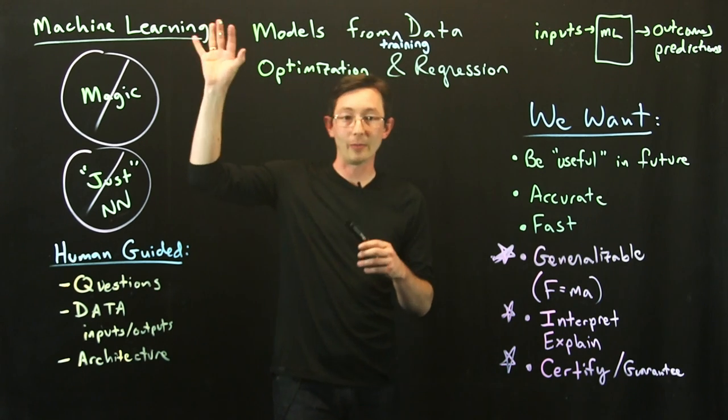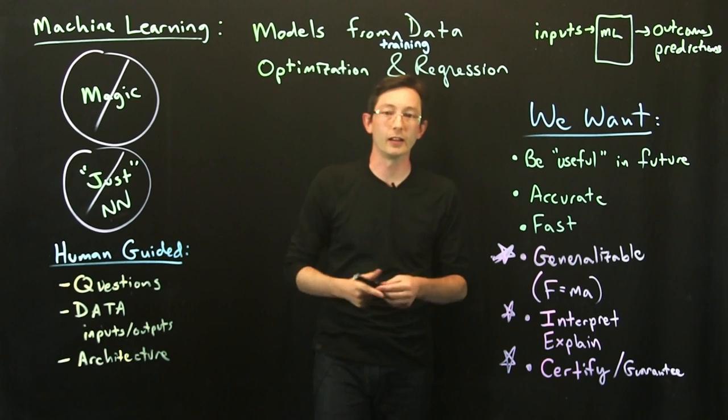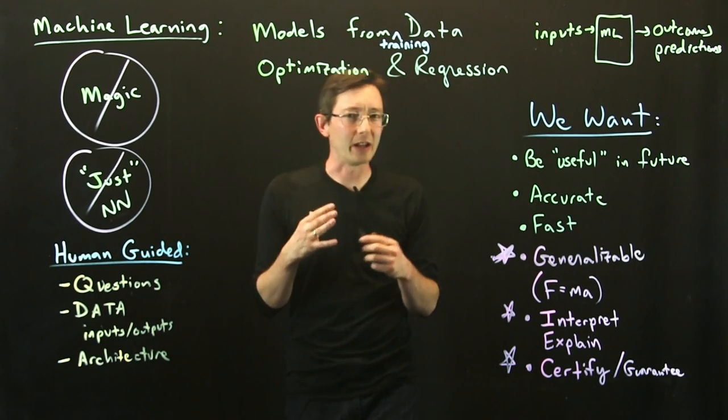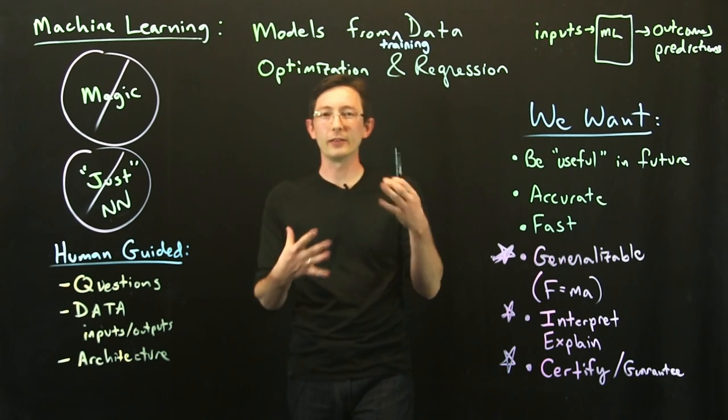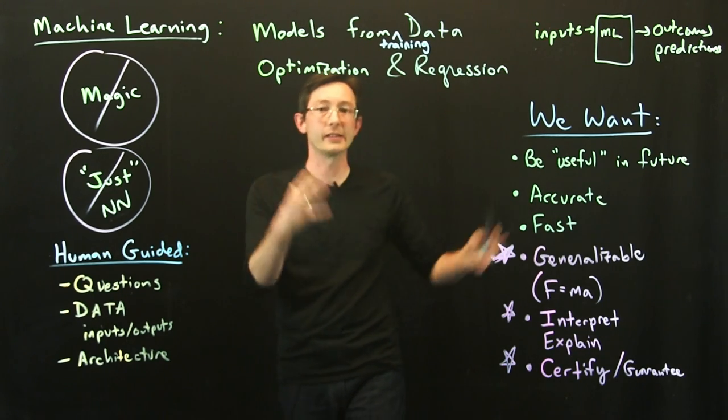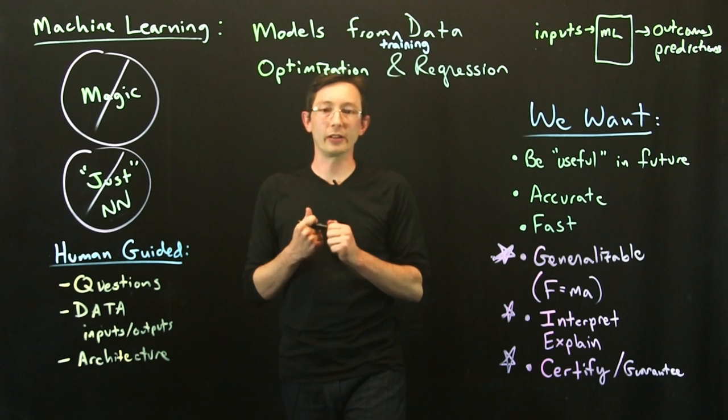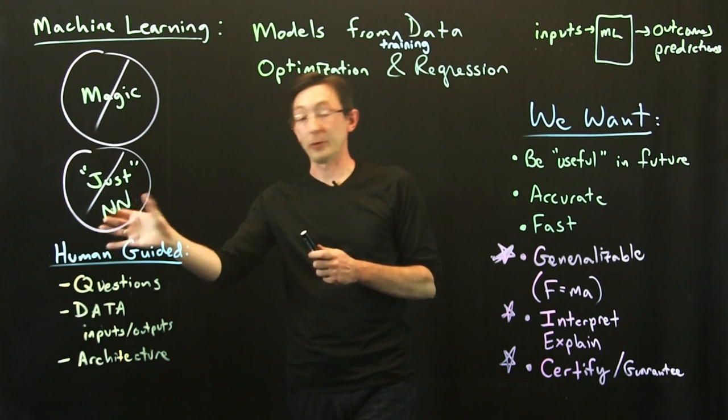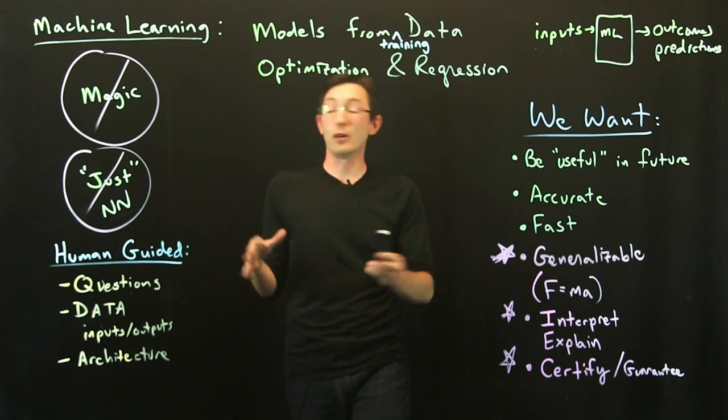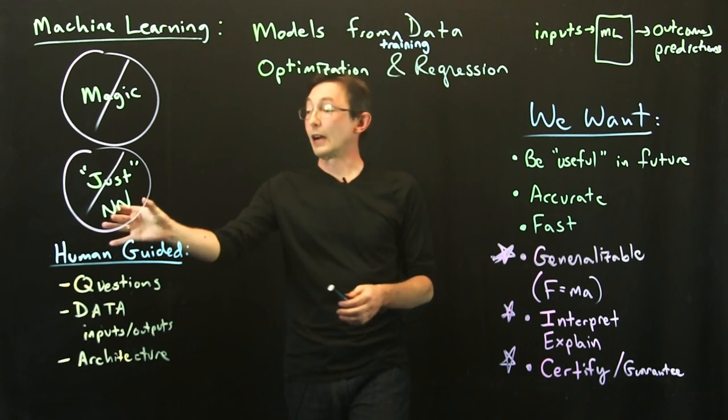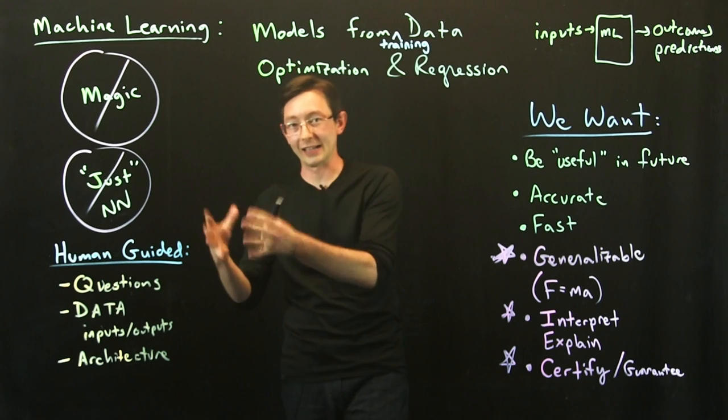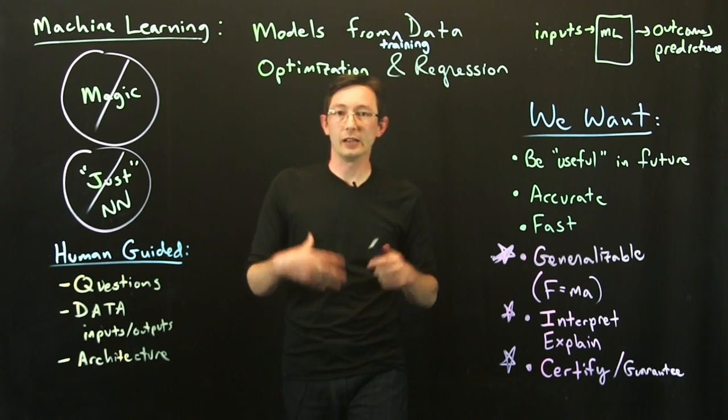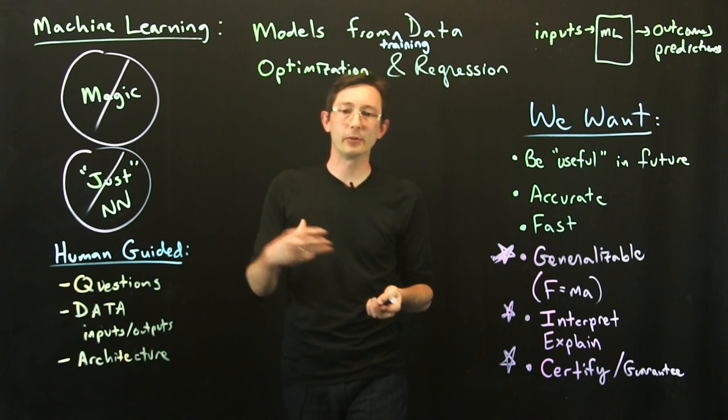Welcome back. So we're talking about machine learning, models from data, and I want to talk a little bit about where neural networks and artificial intelligence fit into this because there are all these different words and phrases for machine learning. A lot of the technology used in your daily life, like Alexa or Siri or Google Images and Facebook,